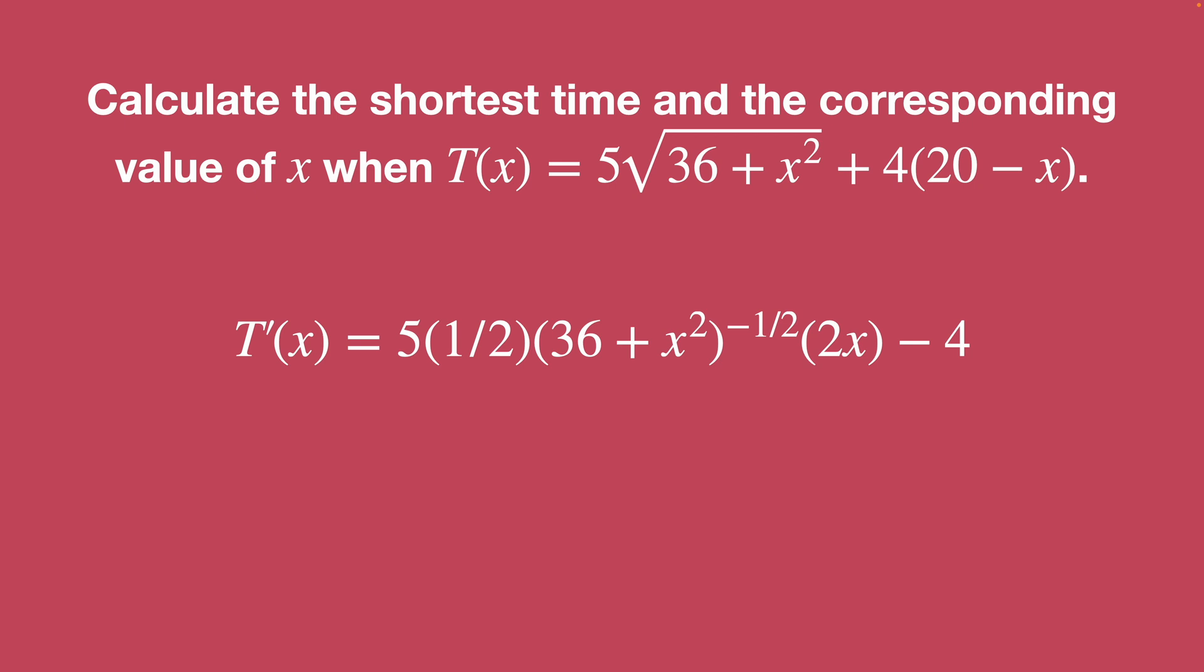And so once you've done that derivative, it's light work, you just set equal to zero and you solve for X and then you'll get X as eight and our minimum time as T. And yeah, we're done.